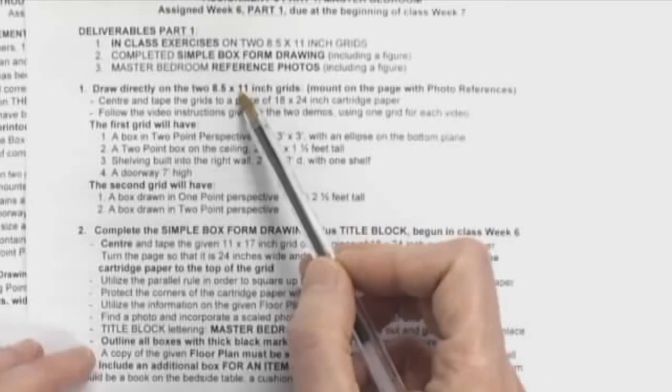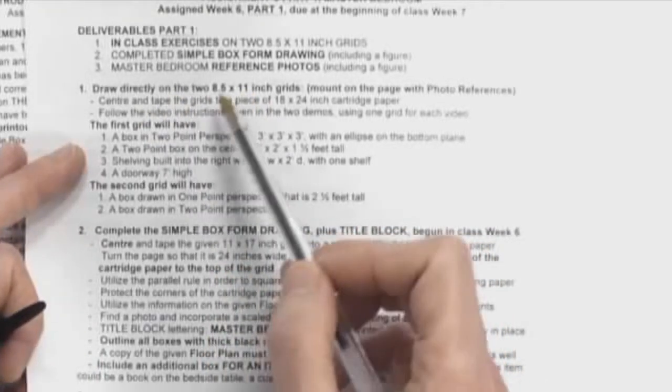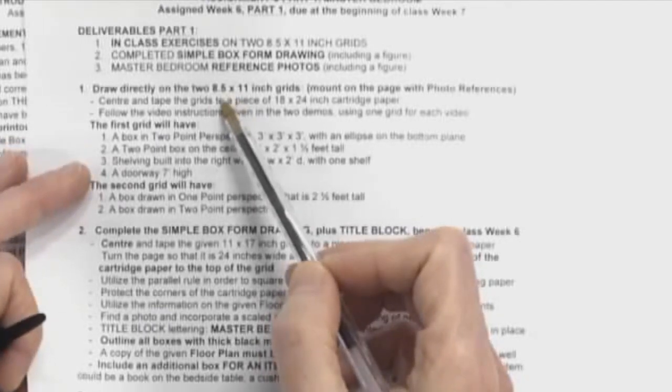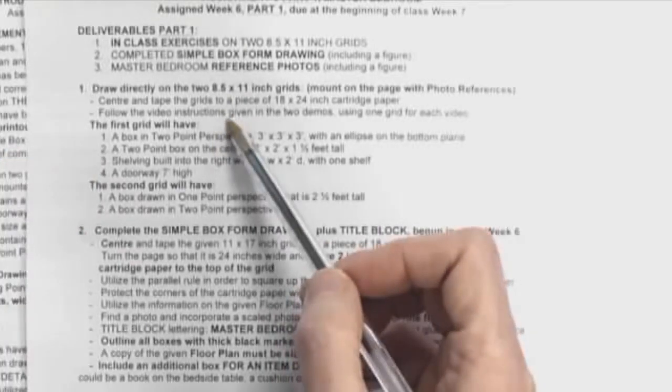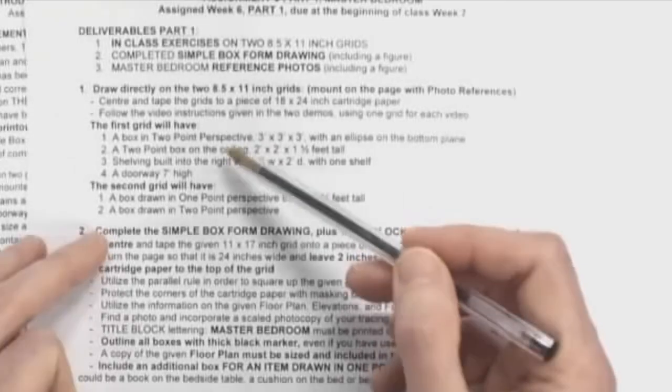We're going to have two little quick sketch exercises for you to do to get you familiar again with the two-point perspective grid. That's what the two little grids in your package today are for. They're meant to help you get those two exercises done. And the instructions are there. There's two separate little in-class exercises to do.